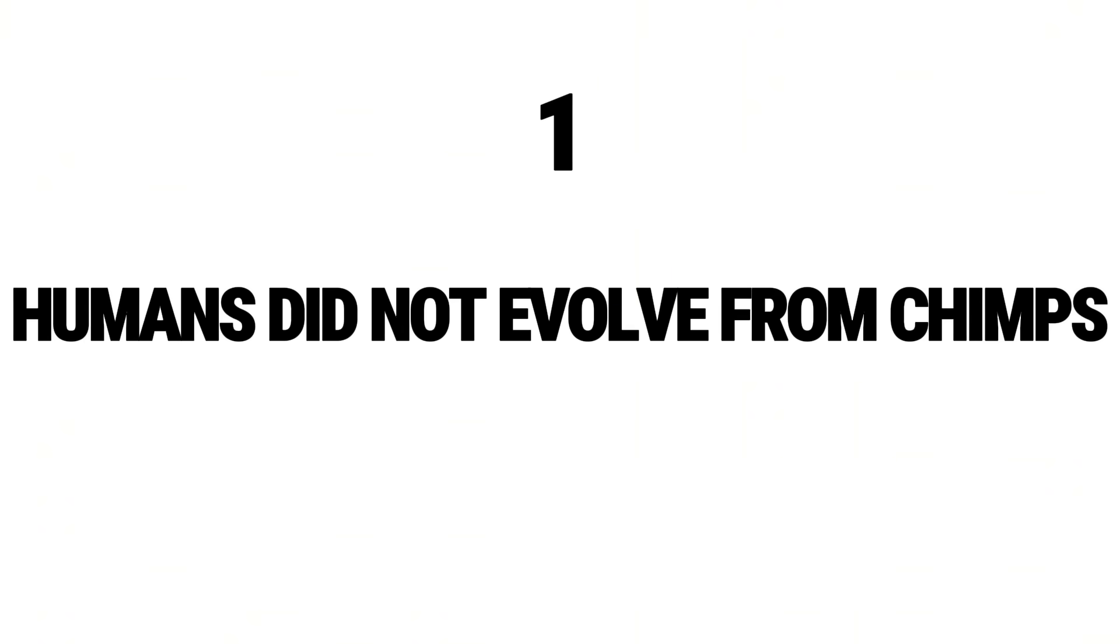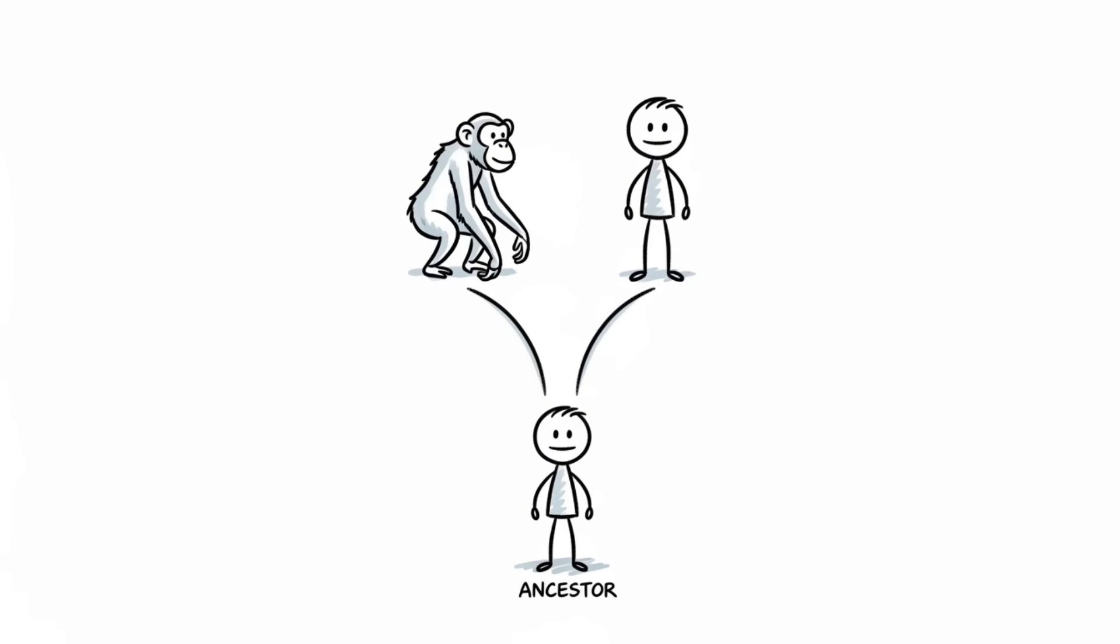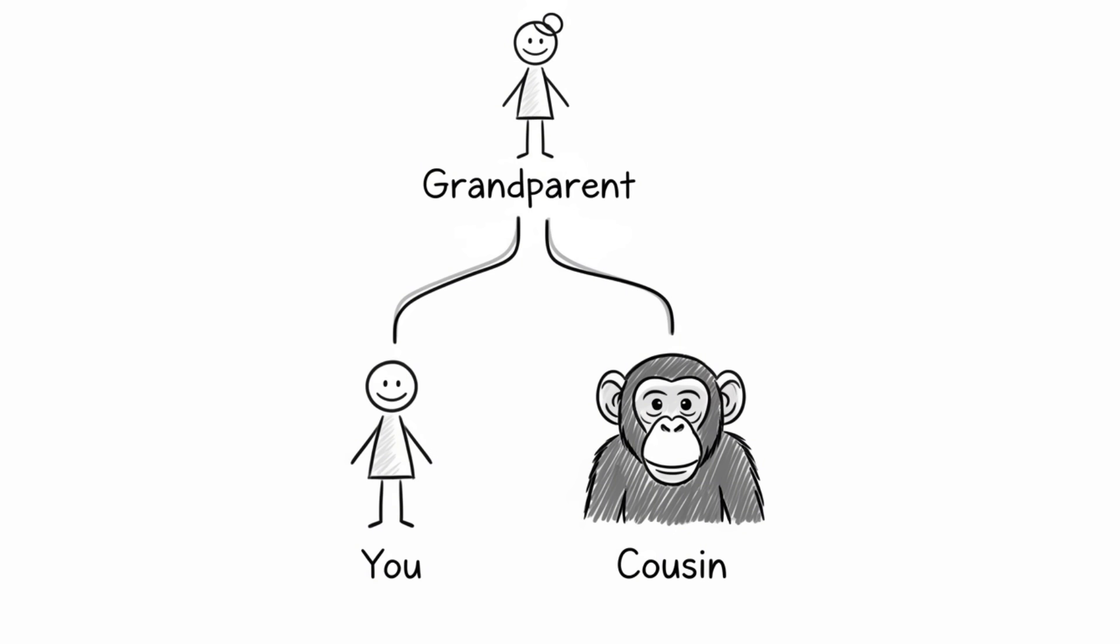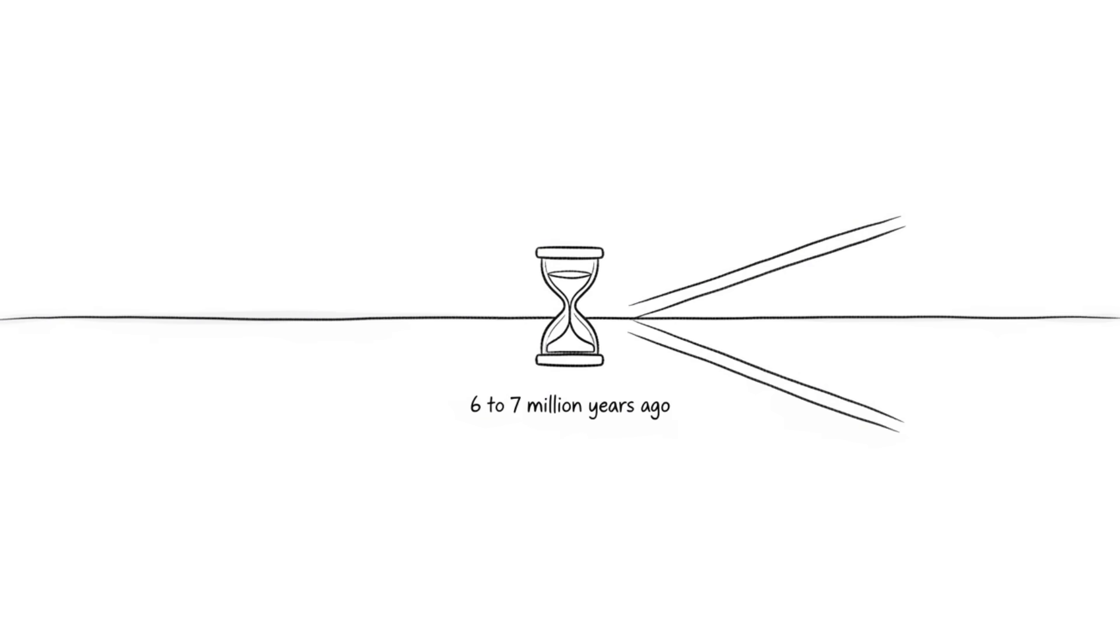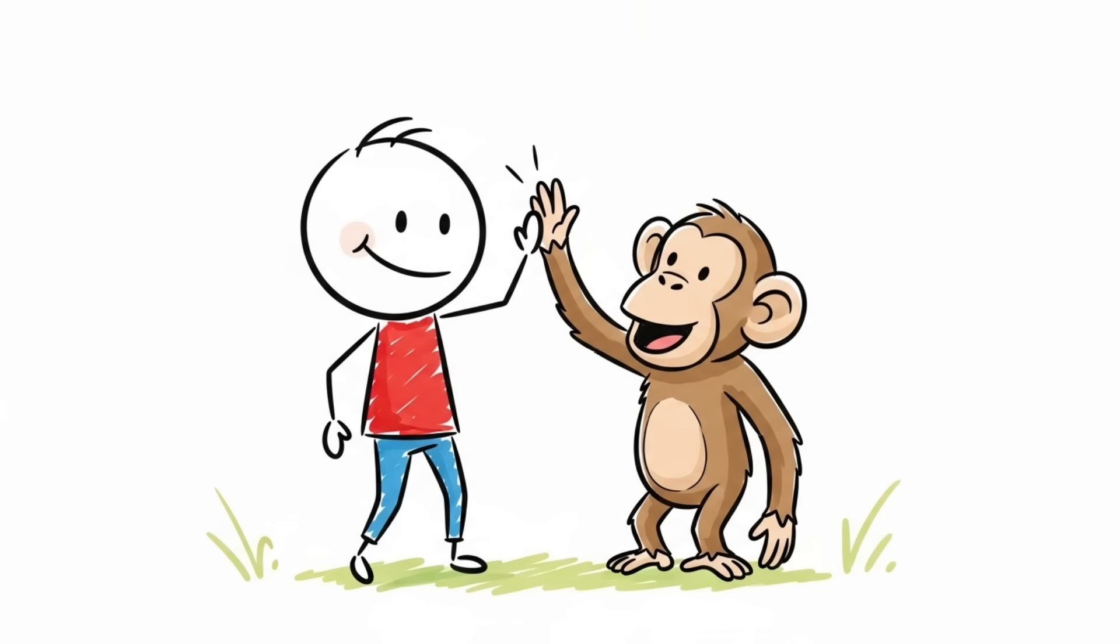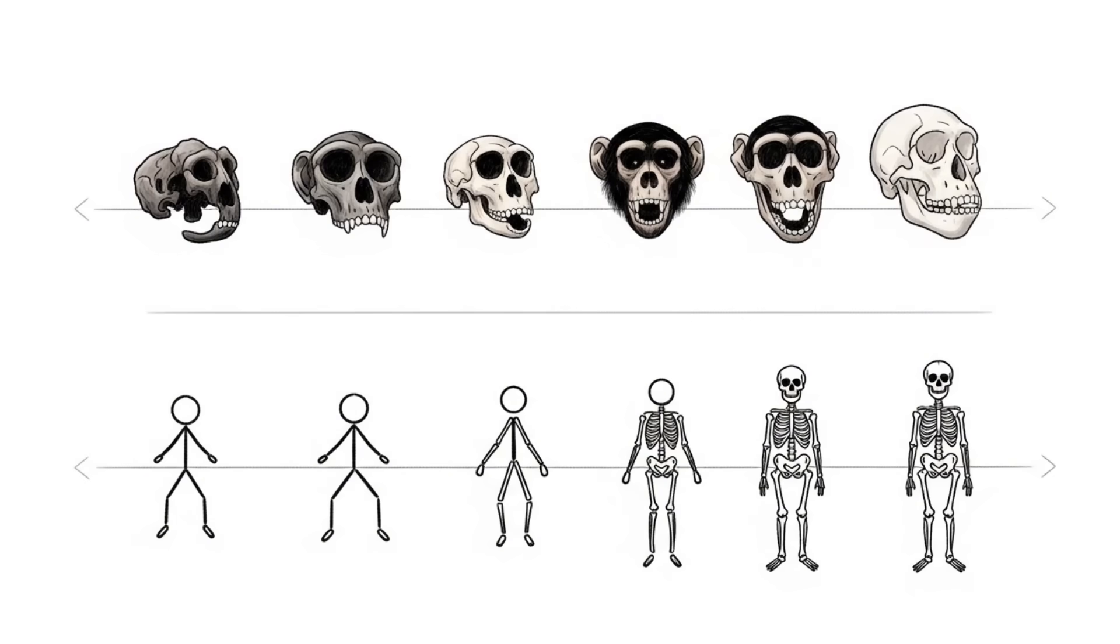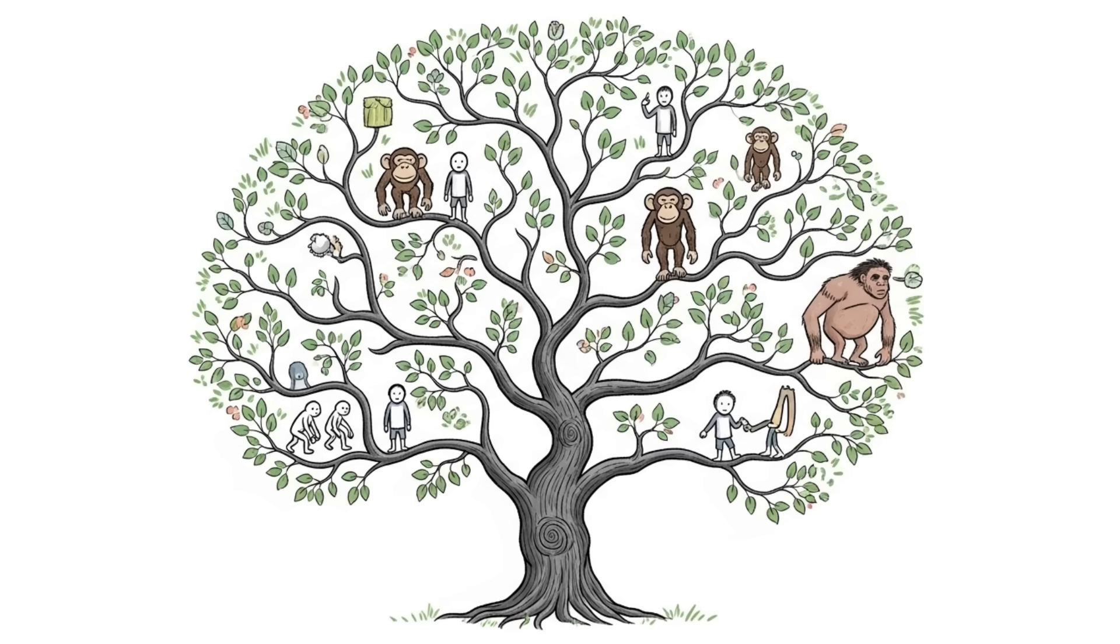Number 1. Humans did not evolve from chimps. The idea that we evolved directly from chimpanzees is one of the most common misconceptions about evolution. We did not evolve from chimps. We share a common ancestor. Think of it like a family tree. You and your cousin share a grandparent, but you didn't evolve from your cousin. About 6 to 7 million years ago, a single species split into two separate evolutionary lines. One line became modern chimpanzees, and the other line became modern humans. Humans and chimps are cousins on the evolutionary family tree. So while we share 98% of our DNA, that doesn't mean we came from them. The fossil record and DNA evidence show a parallel journey. It's a complex family tree, highlighting evolution's web of life.